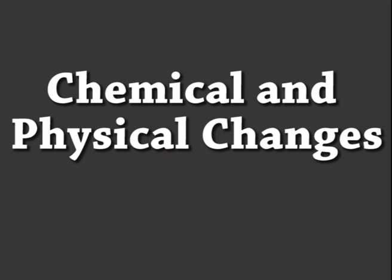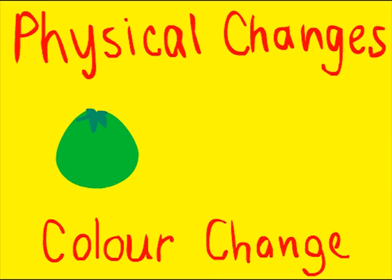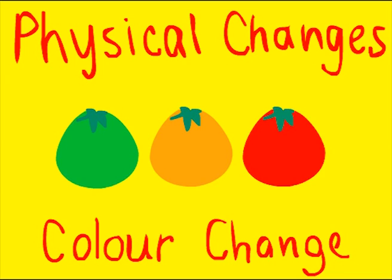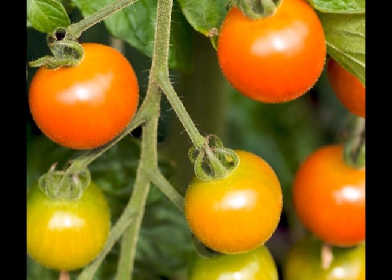Our topic was to study the chemical and physiological changes of ripening in tomatoes as a result of ethylene. Physically, the tomato tissue softens and changes in colour from green to red. Lycopene accumulation, a red pigment, is responsible for this change in colour. Chemically, there is an increase in sugars and a decrease in acidity, which determines the flavour of the tomato.